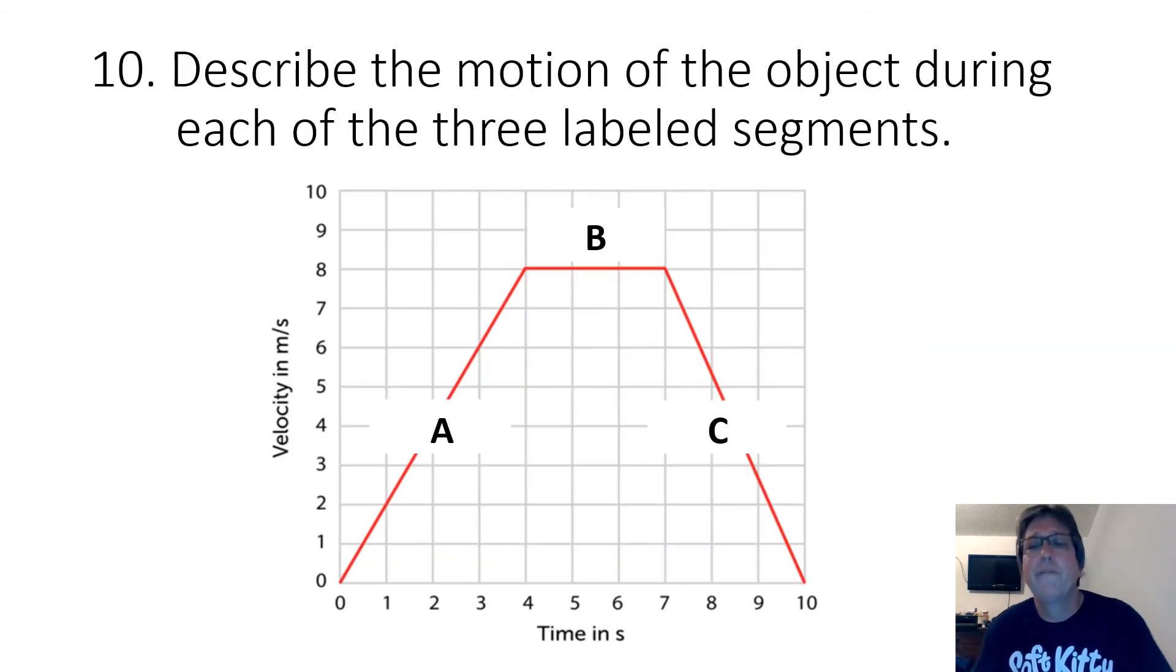So in your problems, the final question, question number 10, asks you to describe the motion of an object during each of the three labeled segments on this graph right here. Okay. So segment A, what's it doing? Segment B, what's it doing? Segment C, what's it doing? Remember, this is a velocity time graph. So it should be pretty easy. Okay.